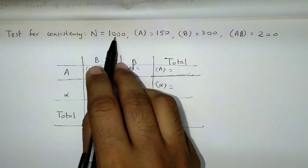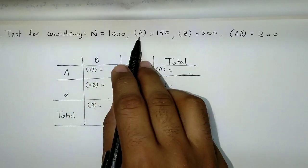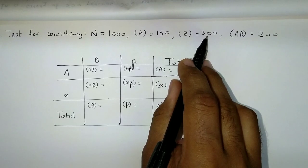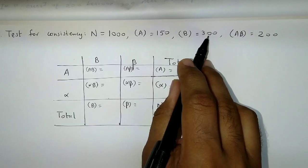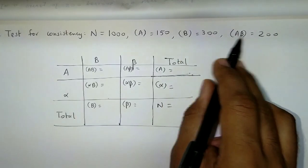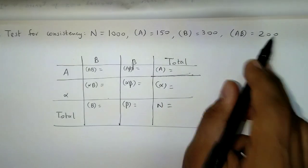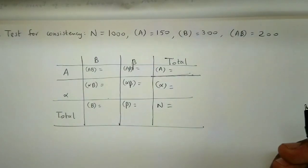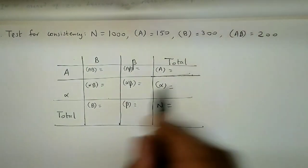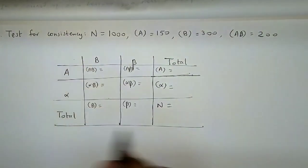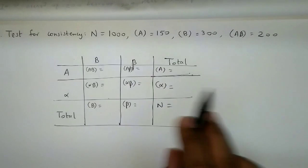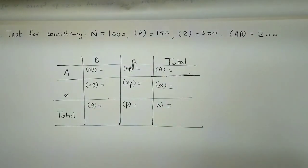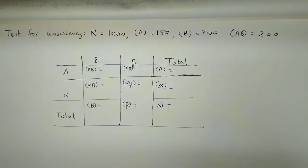n is equal to 1000. Frequency of A is 150. Frequency of B is 300. Frequency of AB is 200. We can easily check consistency with the help of a 9-square table, which I have already drawn. We just need to fill up the values, so let's begin.